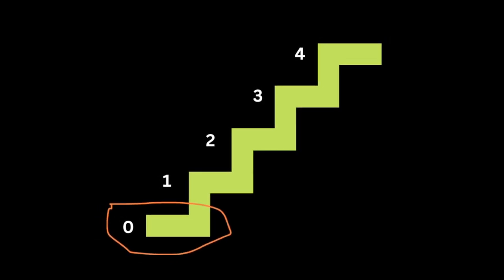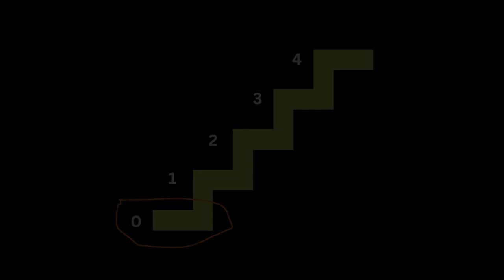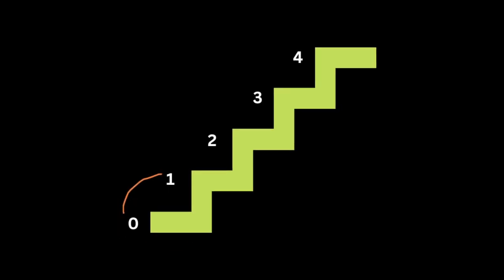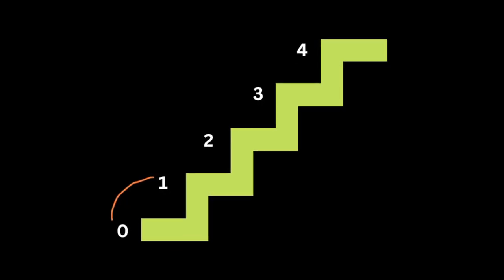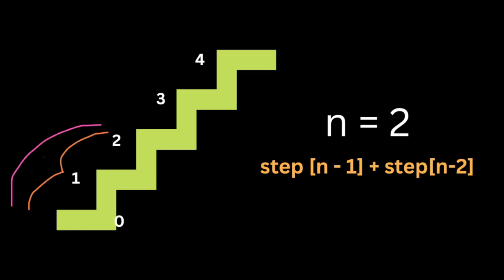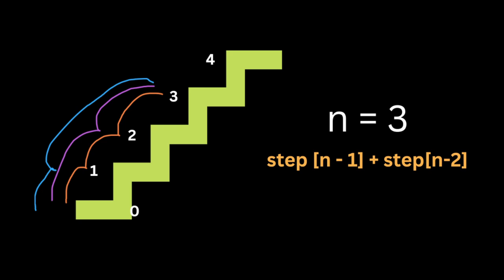zero, then the number of ways to climb the staircase should be zero. If n is equal to one, then there is only one way to climb the stairs. For numbers greater than one, we can simplify the solution by adding the previous steps, meaning n minus one plus n minus two.